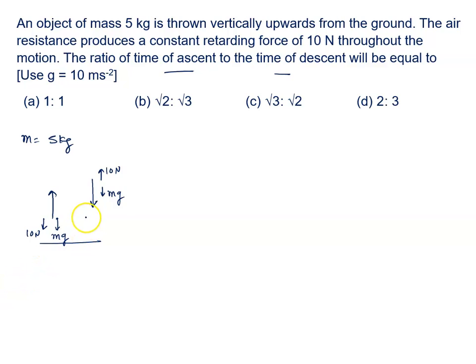And if we calculate the value of the Mg in this situation, mass is 5, gravity is 10, so Mg is given by 50 Newton.